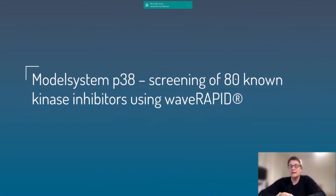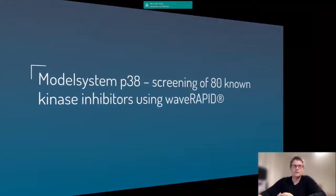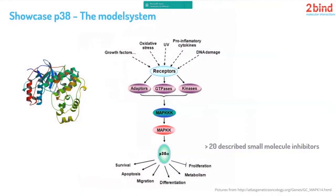To demonstrate the capability of the device and the assays performed at 2WIND, I wanted to show a screen using p38, a known kinase, and 18 known kinase inhibitors. Why p38? Because it's a perfect model system. There are many crystal structures available, the signal transduction pathway is more or less completely understood, and it's well known where p38 is involved in cellular processes like proliferation, metabolism, and so on. There are also a lot of described small molecule inhibitors, making it a quiet night model system.